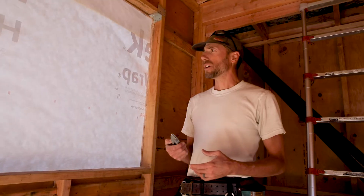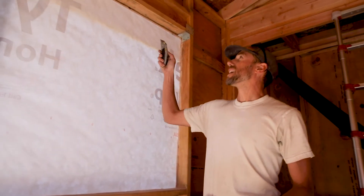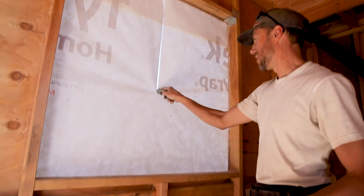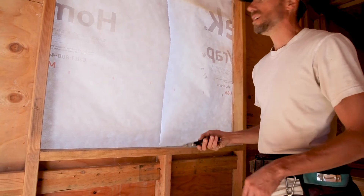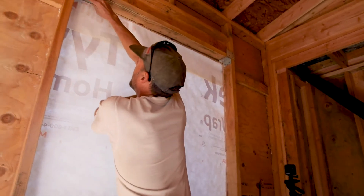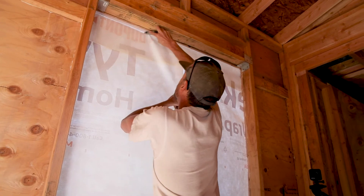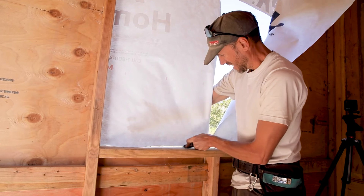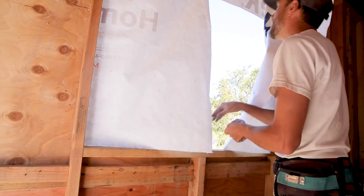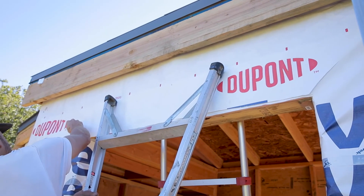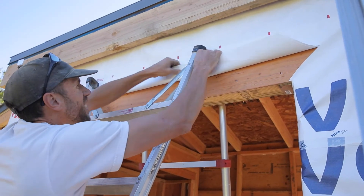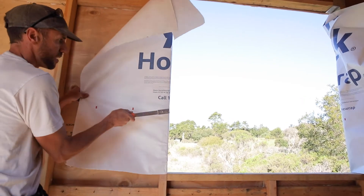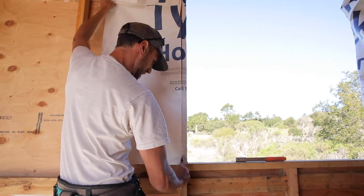Our first step in doing the windows is to cut out the Tyvek. We do an I-cut: start in the middle, make a cut right down, then cut the top and the bottom — it helps to have a sharp new knife. We then make a diagonal cut at each of the top corners and fold up about four to six inches of WRB. We wrap the two sides around the window jambs, staple them down on the inside, and cut off the excess.